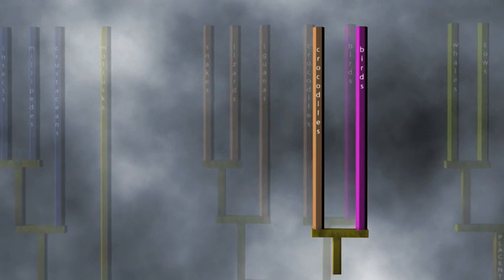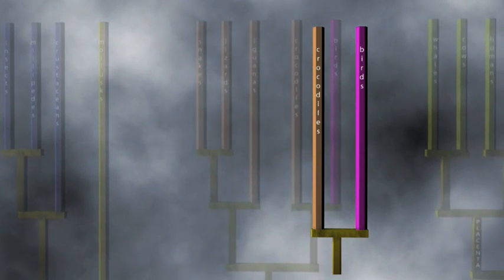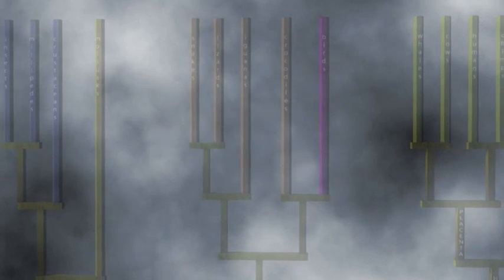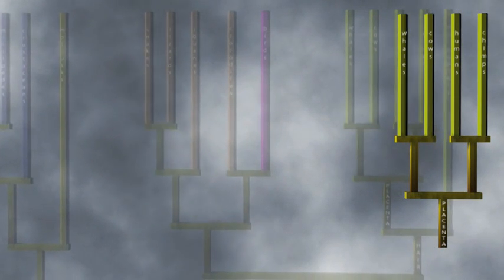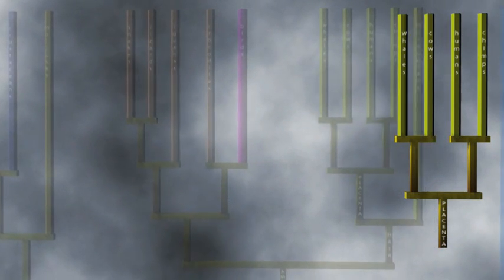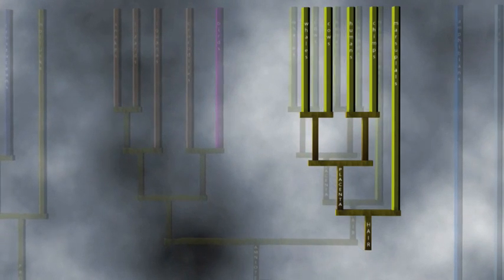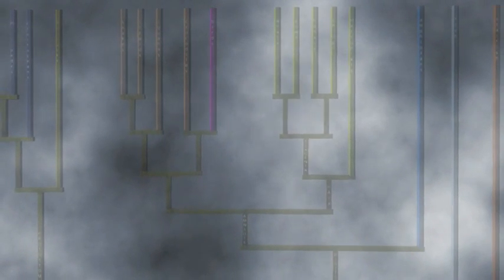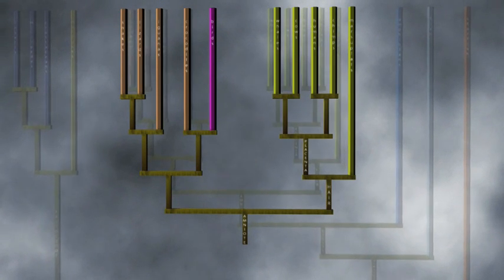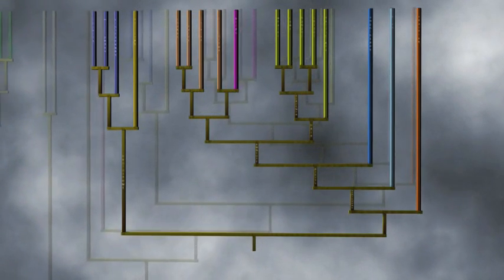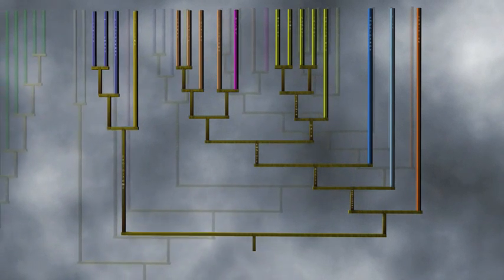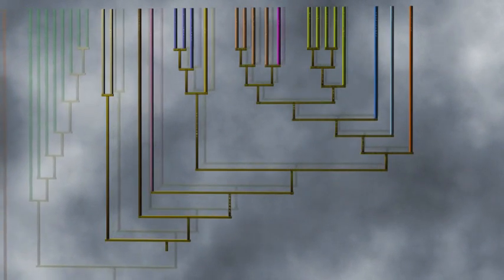Birds and crocodiles are never found with differentiated teeth. Only non-marsupial mammals have a placenta — birds and mollusks are never found with one. Only mammals have hair and mammary glands. Amniotic eggs are never found in fish or arthropods. A mix and match of characteristics like these would make it extremely difficult to objectively organize species into nested hierarchies. The consistency of nested hierarchies is another success for common descent.